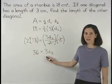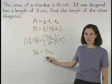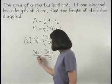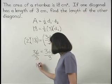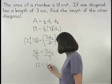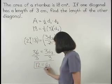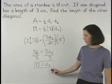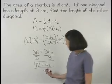So we have 36 equals 3d2. And dividing both sides by 3, 12 equals d2. So the length of the other diagonal of the rhombus is 12 centimeters.